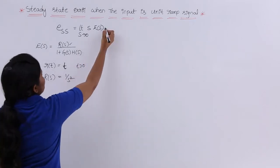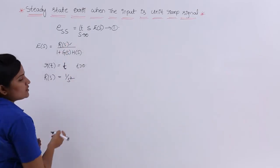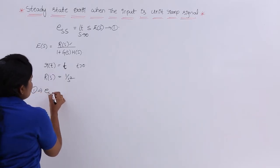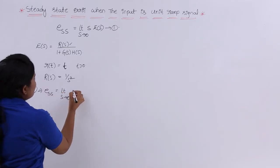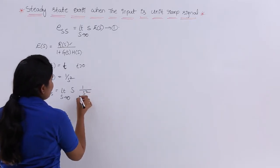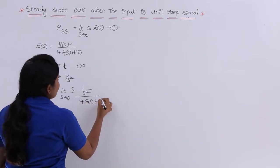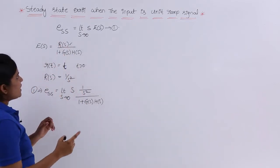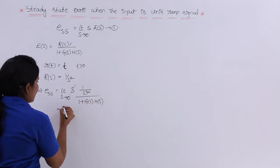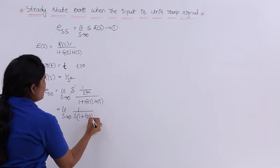Now I am going to substitute these two values into equation number 1. The E(S) value with R(S) included will be substituted in the steady state error equation. So equation number 1 becomes: ESS is equivalent to limit S tending to 0 of S into, in place of E(S), writing R(S) as 1 by S squared divided by 1 plus G(S) into H(S). The S cancels, leaving the limit S tending to 0 of 1 by S into 1 plus G(S) into H(S).